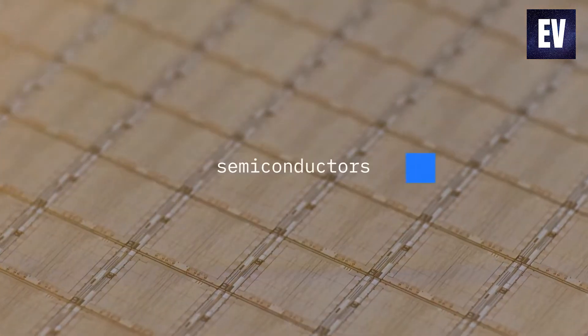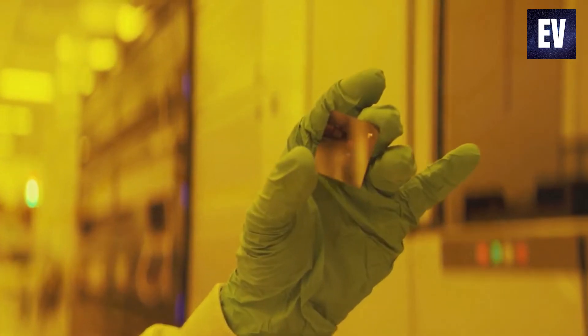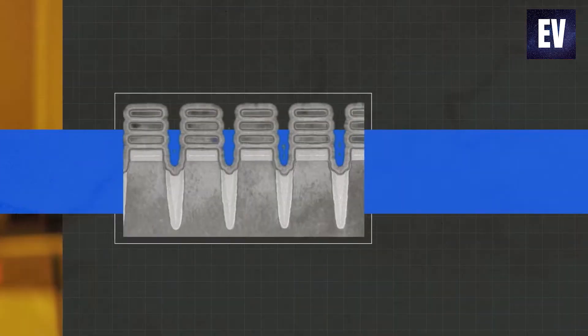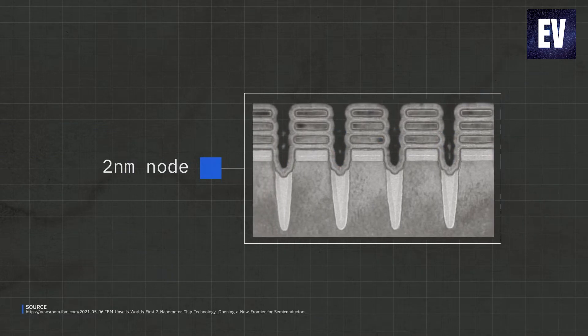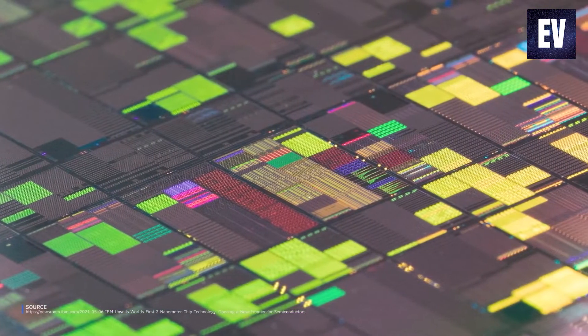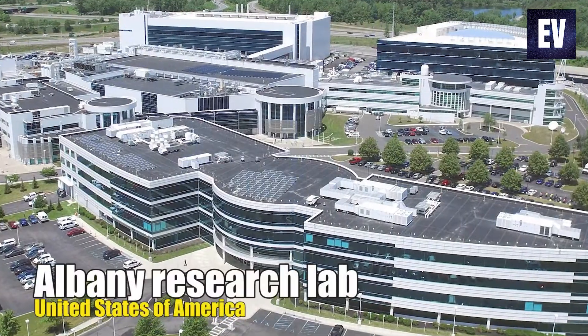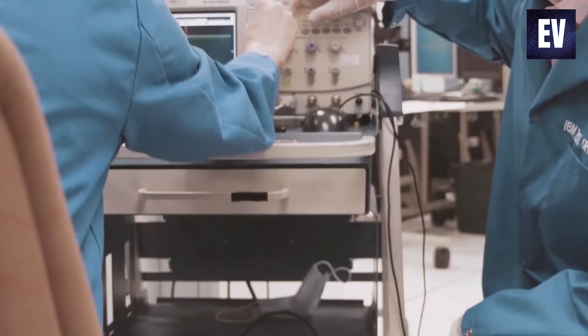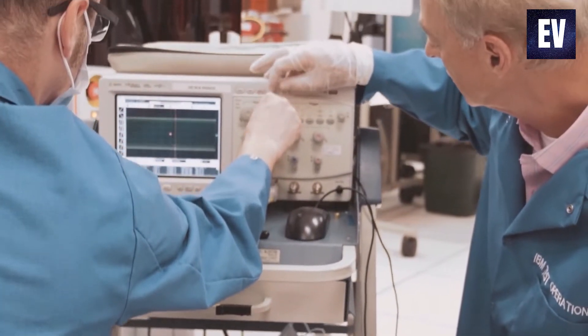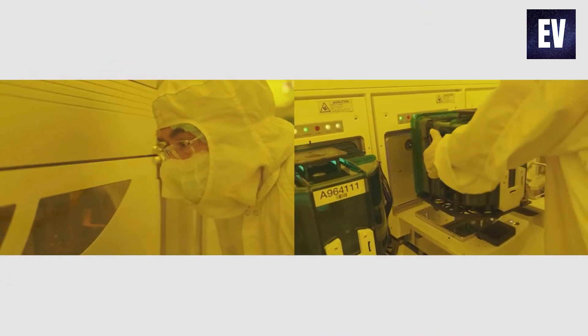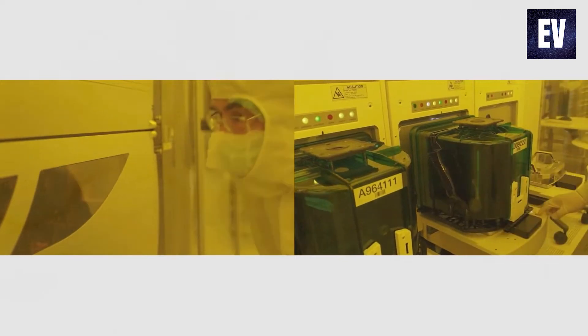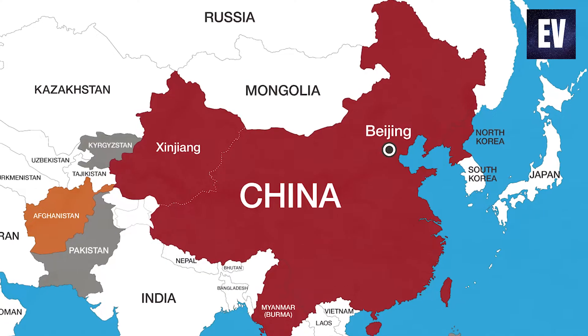IBM unveiled a significant advancement in semiconductor design and manufacturing with the announcement of the fabrication of the world's first chip to use 2 nanometer nanosheet technology. IBM stated that the test chip was constructed at its Albany Research Lab in the United States. The announcement comes amid a global scarcity of computer chips and a push to diversify chip manufacturing.